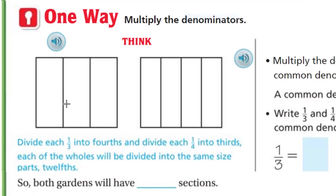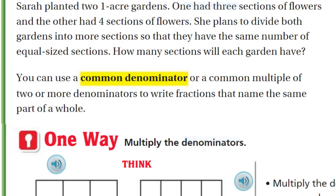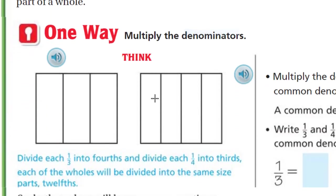Here's our one garden. Think of this as our one garden with the thirds. If you recall, we're going to divide it into three sections. And then this is the garden that's been divided into four sections. Here's one acre garden. Here's the other acre garden. Let's just divide each one third into fourths and divide each one fourth into thirds. Each of the holes will be divided into the same number, same size parts, twelfths.